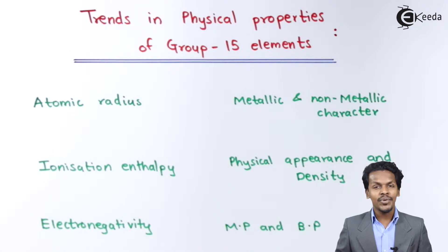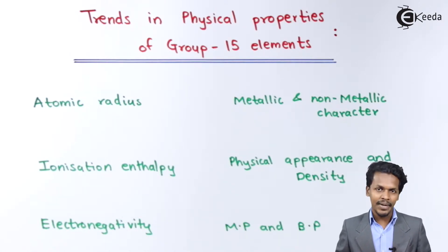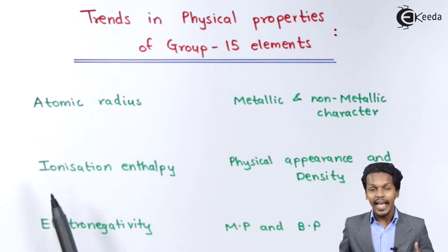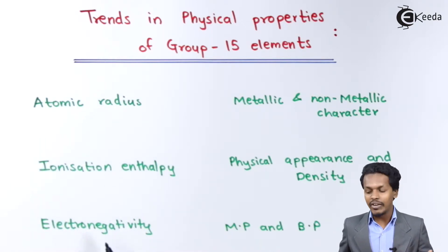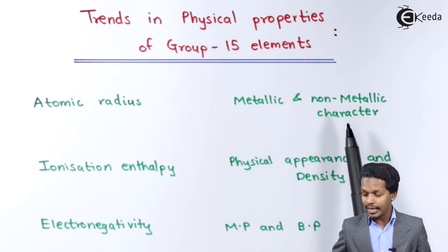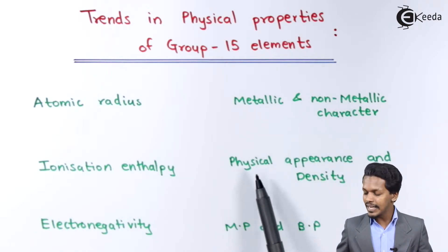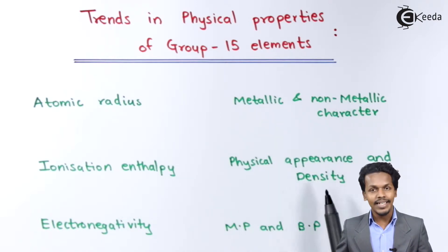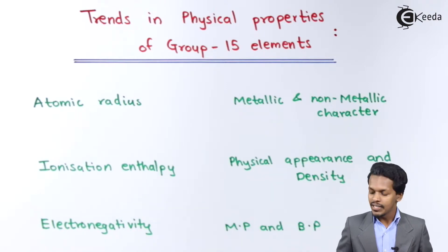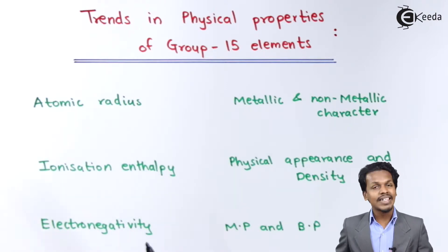In this topic we are going to talk about the trends in the physical properties of group 15 elements. The points we are going to cover are atomic radius, ionization enthalpy, electronegativity, metallic and non-metallic character, physical appearance, density, melting point, and boiling point.